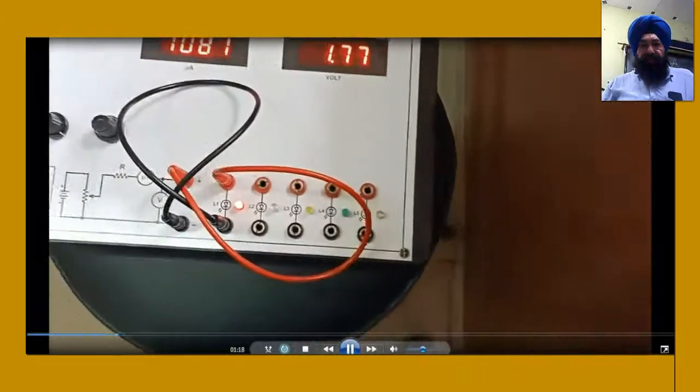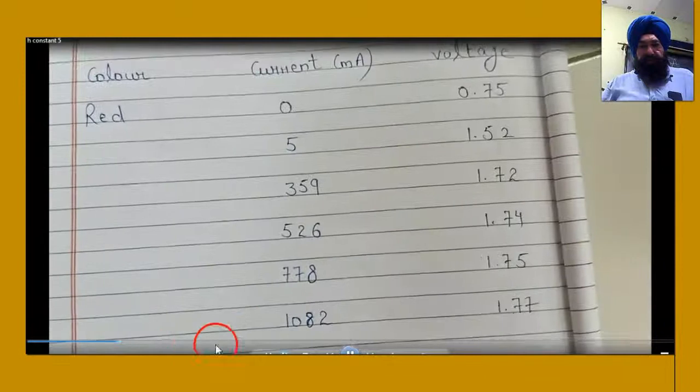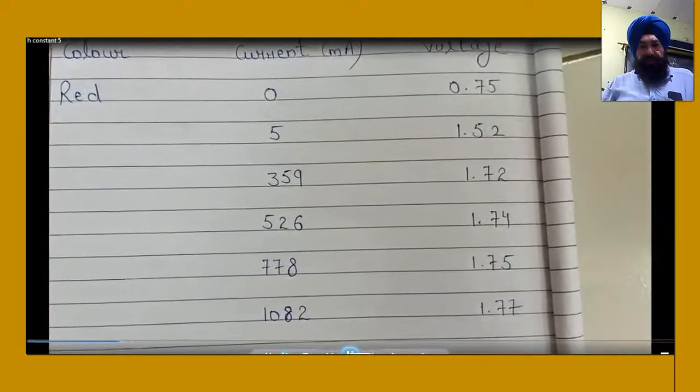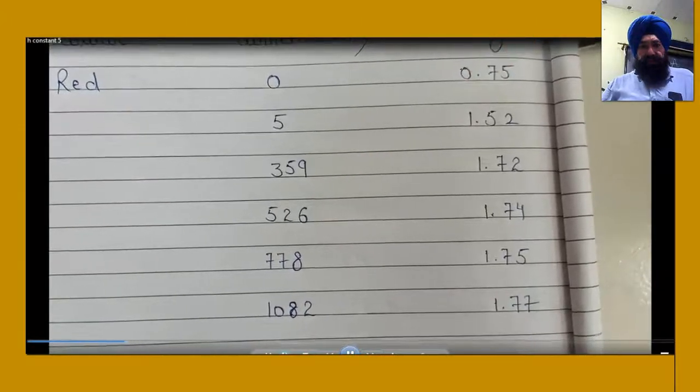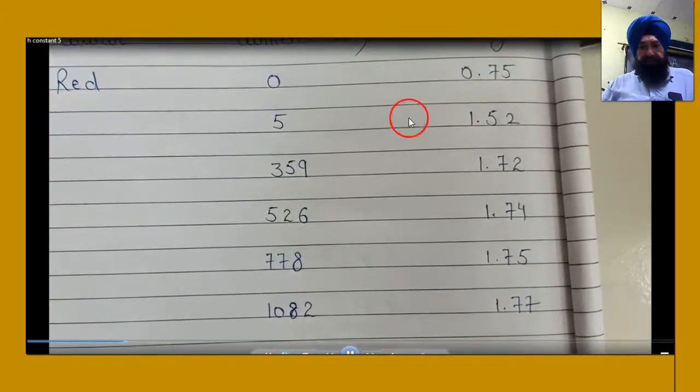So similarly, now we are having the data, voltage versus current. One thing you notice, current is increasing. We are going from here to here, current is increasing.